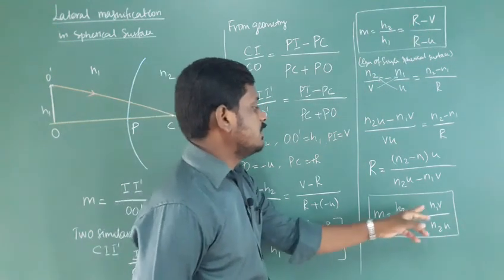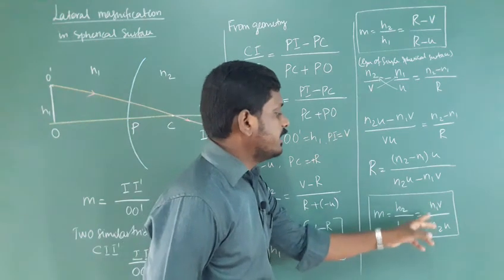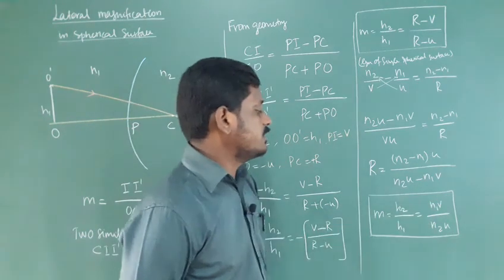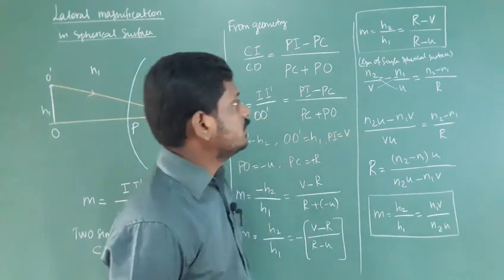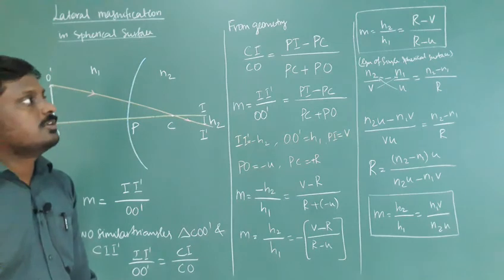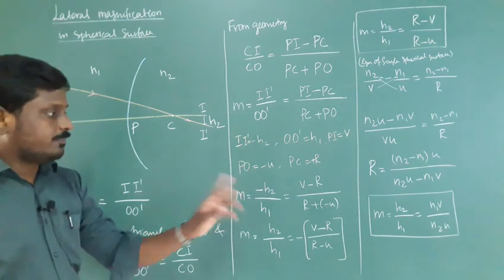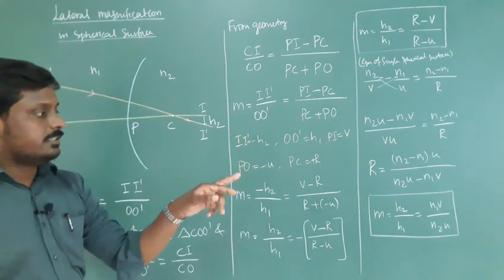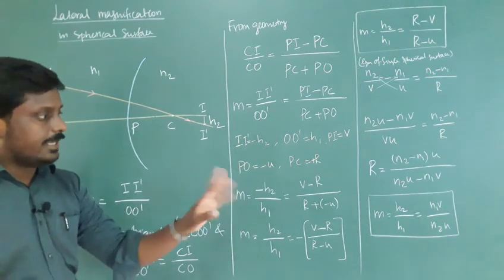In the question, if they give the refractive index of the two media, object distance and image distance, you need to use this formula. There are two formulas for finding lateral magnification: M equals R minus V by R minus U, and in terms of refractive index, N₁V by N₂U.